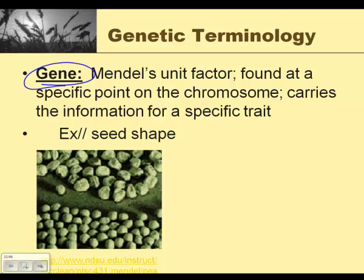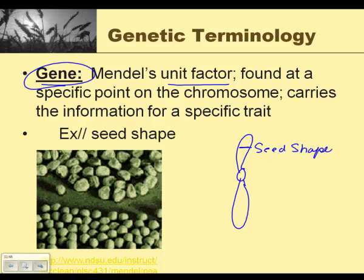An important thing to remember is that a gene is Mendel's unit factor, and a unit factor is found at a specific point on the chromosome and carries information for a specific trait — so it could be seed shape. If we were to draw a single-stranded chromosome, we could say that this region would be the gene for seed shape, or the gene for eye color, hair color, whether you can roll your tongue or not. On a chromosome, there are many different types of genes, and each chromosome carries many genes.